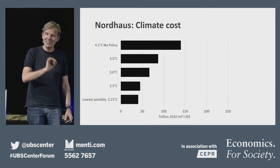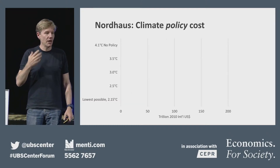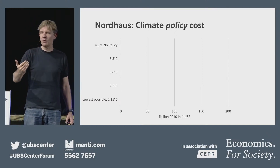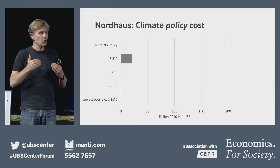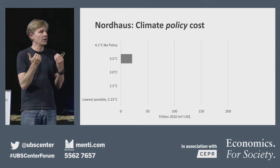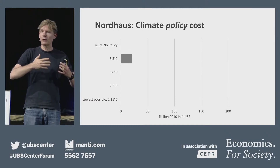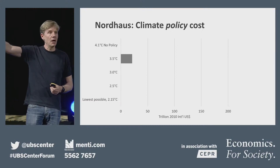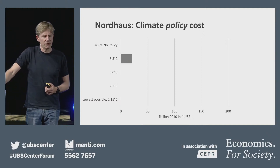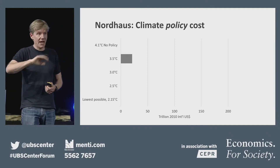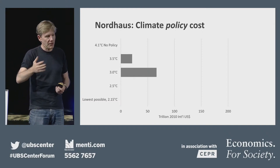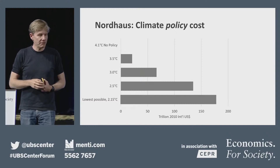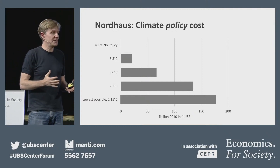But we forget that to get to those lower temperatures, we also have to pay a policy cost. The policy cost of no policy is zero. If you start reducing — say we go down to 3.5 degrees — you actually have to introduce some sort of costly policy to reduce emissions. You do that with a global carbon tax: you start off with $36 per ton of CO2, ending up by the end of the century with more than $130–$140. If you want to get to 2.5 degrees, it starts getting really expensive. And at 2.15 degrees, it's an eye-watering $177 trillion.